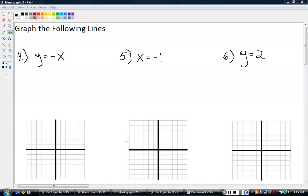Example number four, graph the following lines. Y equals negative X. Now, that might not look like it's Y equals MX plus B. Remember, we're dealing right now, the last couple examples in the last video, lines in this form, slope-intercept form.